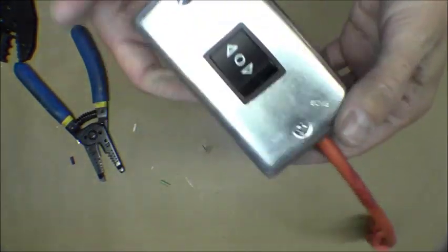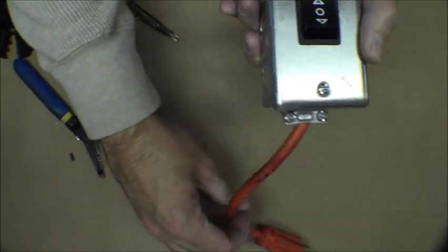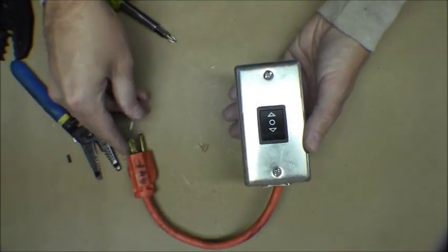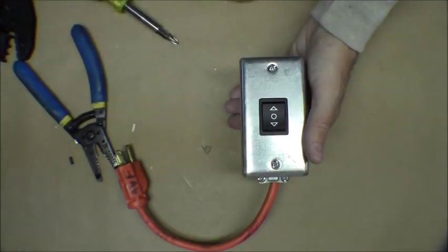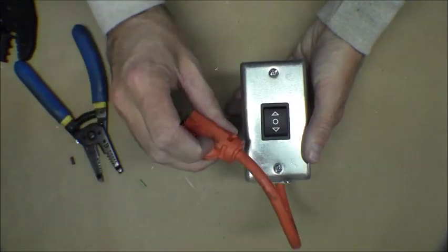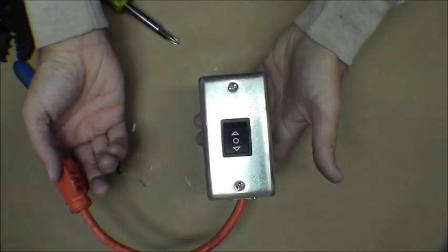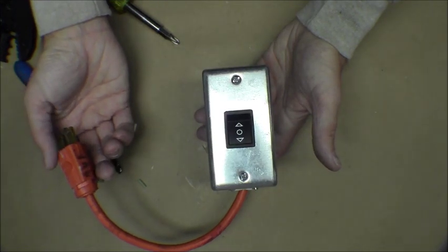And then when you need to power up from your generator plug, basically just shut this off, plug in your generator to here and switch it to that, and you're off running your furnace off your generator.